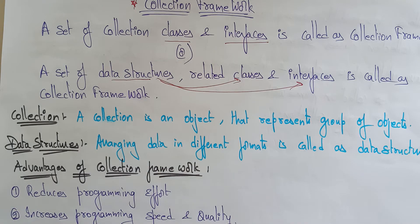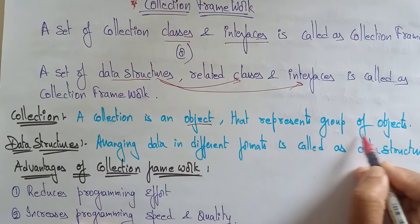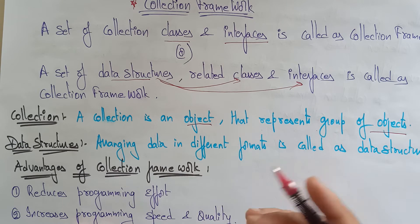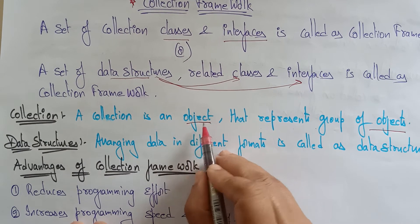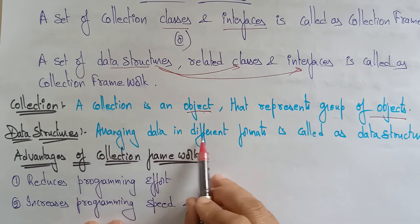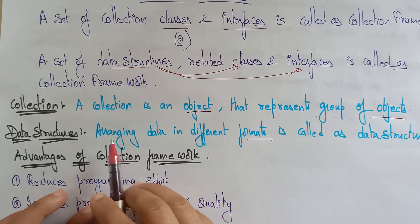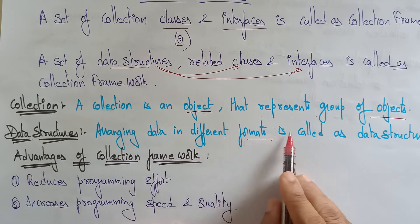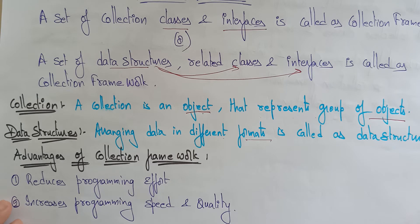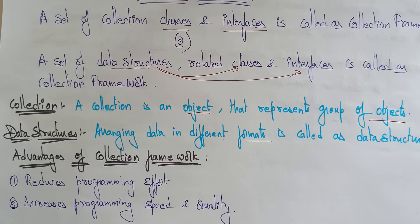First of all, what is a collection? A collection is an object that represents a group of objects. Then what is a data structure? Arranging data in different formats — arranging data in a stack-wise, queue-wise, or linked list-wise manner. So arranging data in different formats is called a data structure.